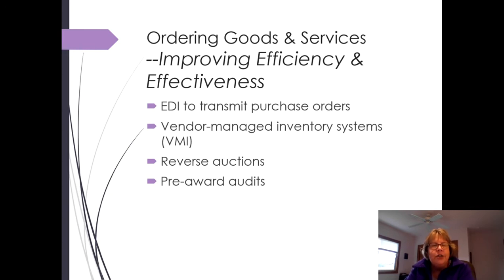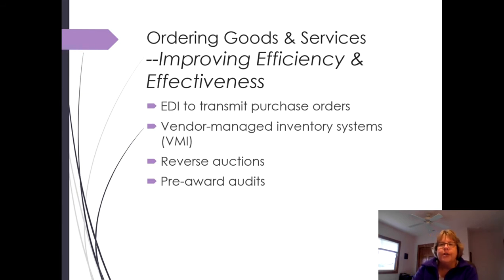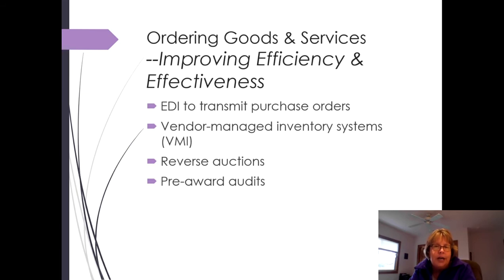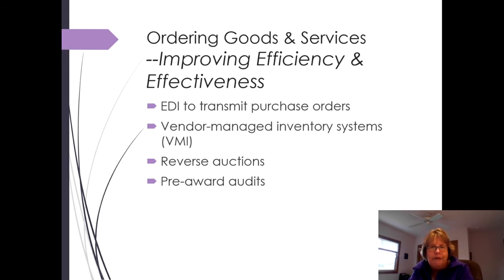The next improvement is vendor managed inventory systems. A company gives its supplier or vendor access to the system to know how many items they're producing or selling, what the forecast is, and the vendor is then responsible for making sure enough inventory is there at the right time. In grocery stores, Pepsi and Coke actually do vendor-managed inventory — they're responsible for refilling the shelves. Frito-Lay does this as well.